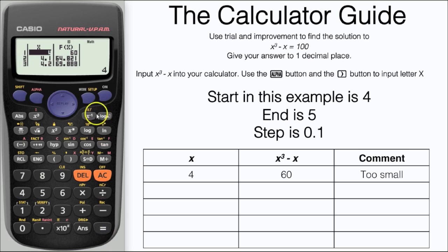When X is 4, f of X is 60. This is the example one that was given originally in our table. If we scroll down to five, we can see the f of X would be 120, so we can put that in as our next value. Our comment would be that that is too large as we're looking for 100 in this example.